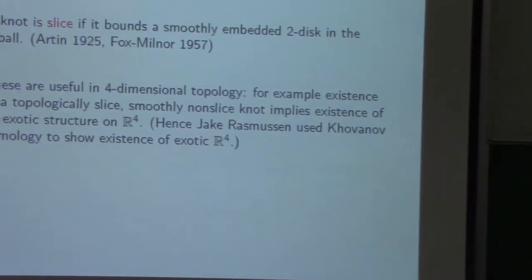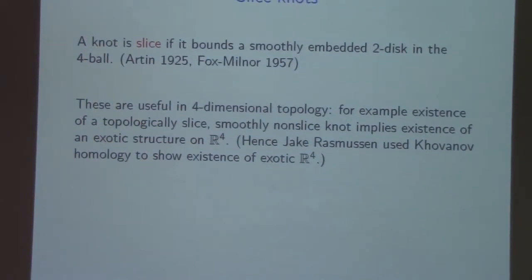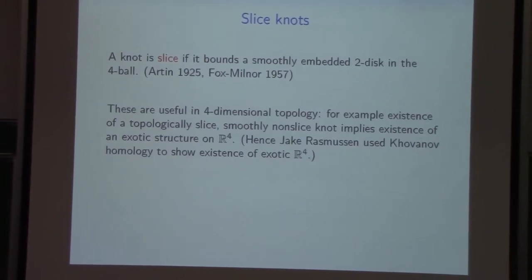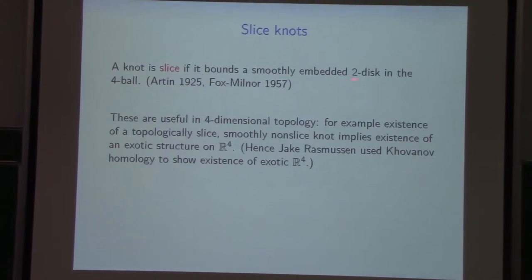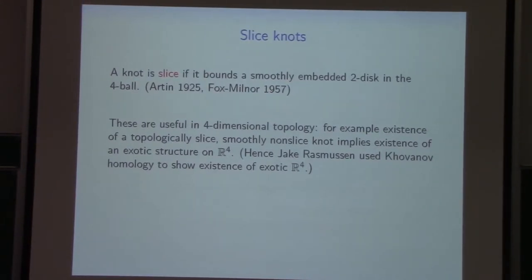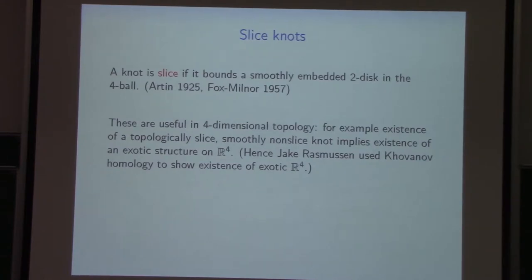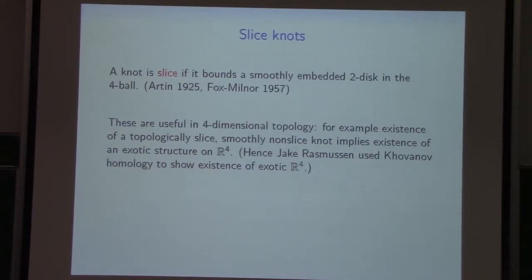Let me give a little motivation. Slice knots are useful in four-dimensional topology. It's useful to know if knots are slice; more generally, it's useful to know the minimal genus of a surface bounded in a four-ball. This is related to a key smooth invariant of smooth four-manifolds: the genus function. If you have a homology class in a closed four-manifold, you want to know the minimal genus of the surface representing it.